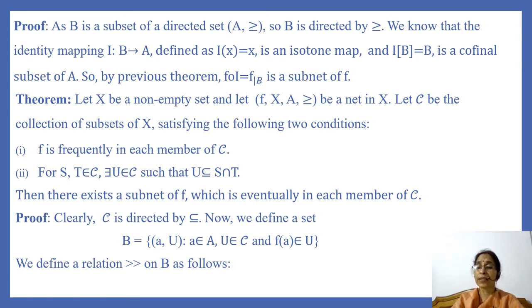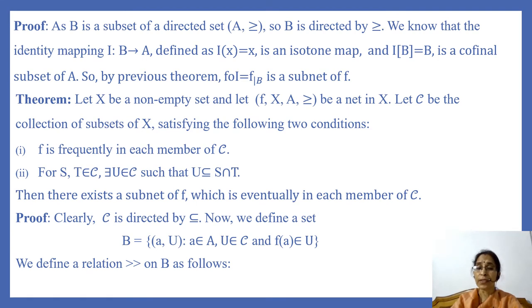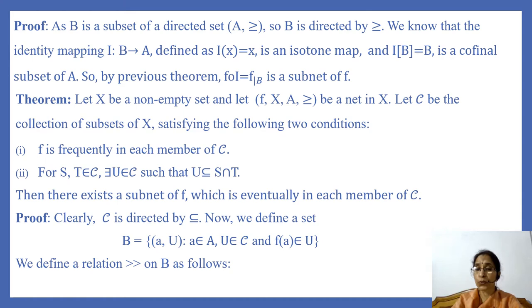C is directed by the inclusion relation because C is a collection of subsets of X. Now we define a set B containing ordered pairs of the form (a, U), where a belongs to A and U belongs to C, such that F(a) belongs to U. Now we define a relation denoted by ≫ on B as follows.